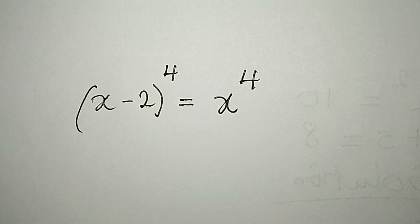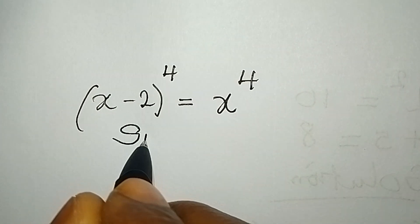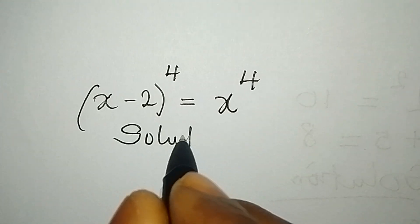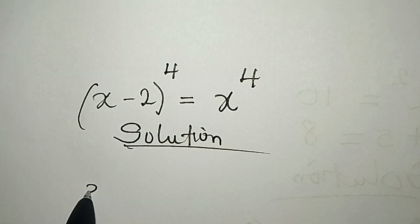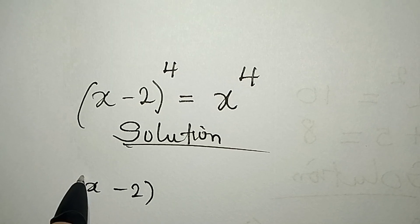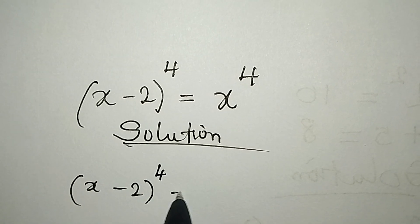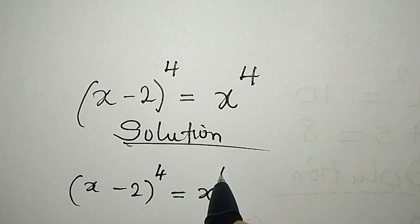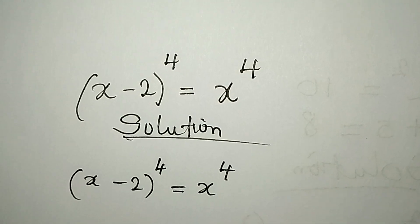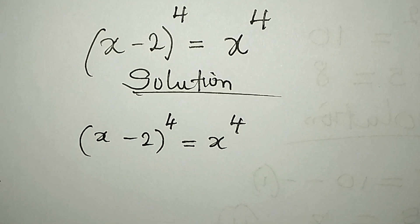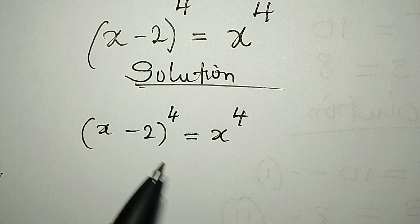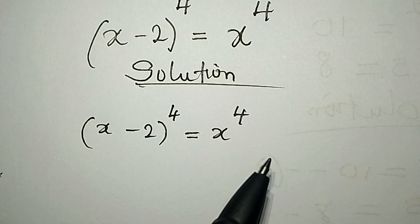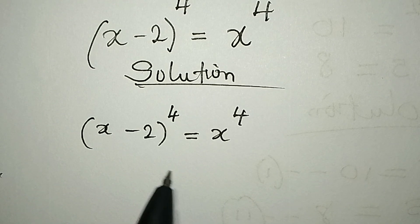Hello everyone, let's provide the complete solution to (x minus 2) to the power of 4 equals x to the power of 4. This is simple — remember we are going to get all the solutions.